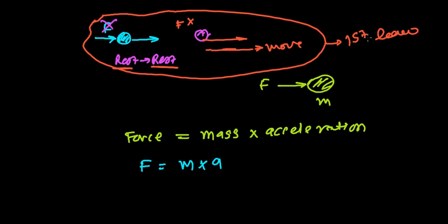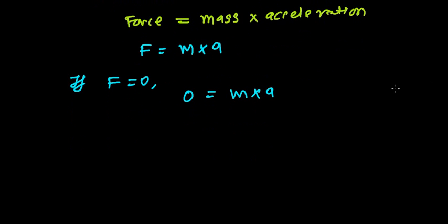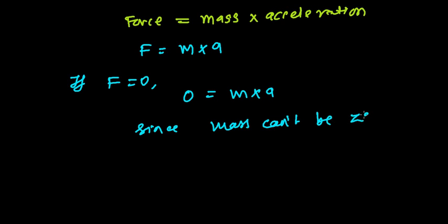Now we need to prove Newton's first law. If there is no force — so I'm supposing force equals zero — what will happen? Then mass times acceleration will be zero. And everybody knows that mass cannot be zero, since the mass of an object can't be zero because matter cannot be zero. So definitely, acceleration should be zero.